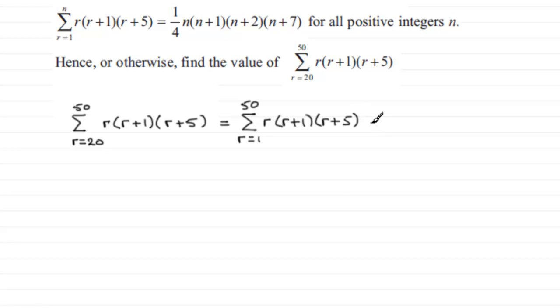As long as we subtract the sum of r going from 1, not up to 20 but up to the term before 20, so in other words up to 19 of r multiplied by r plus 1 multiplied by r plus 5. This is a common technique that we use when we're trying to do a sum that doesn't start from 1.